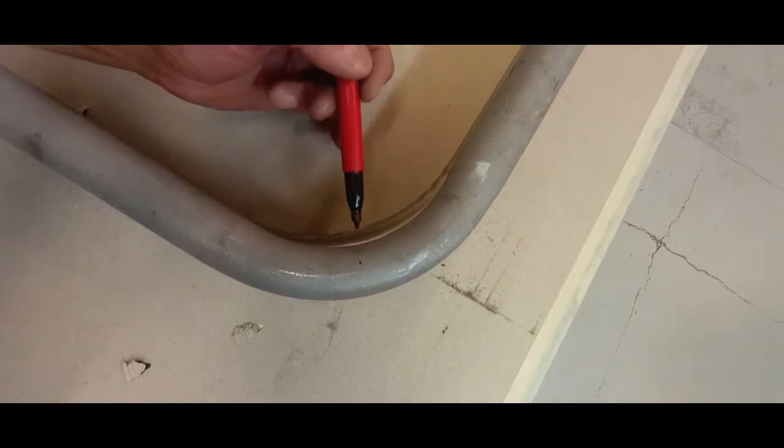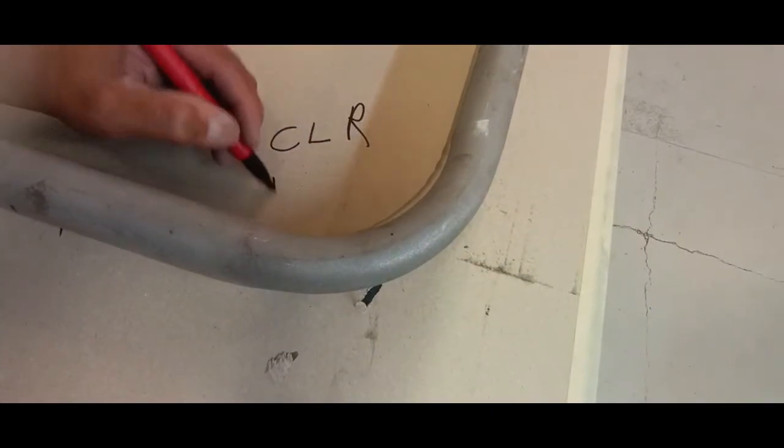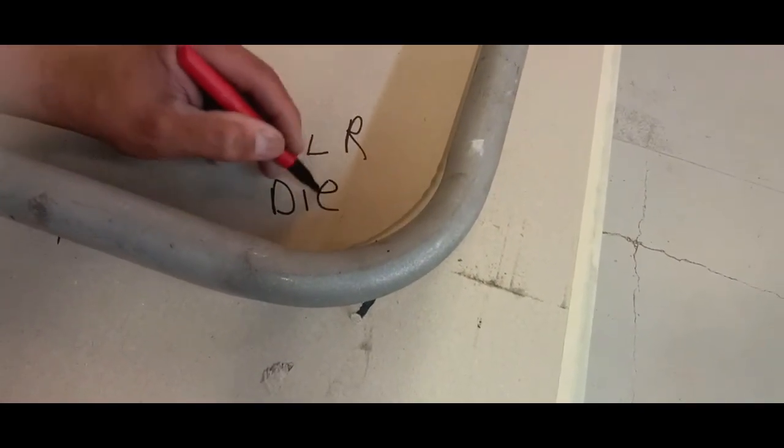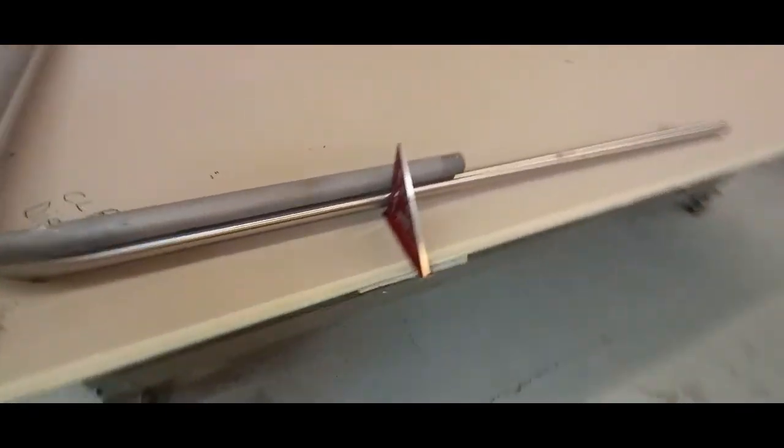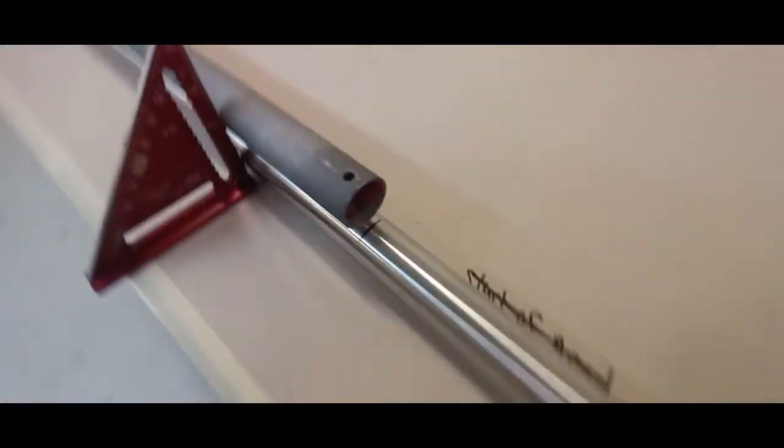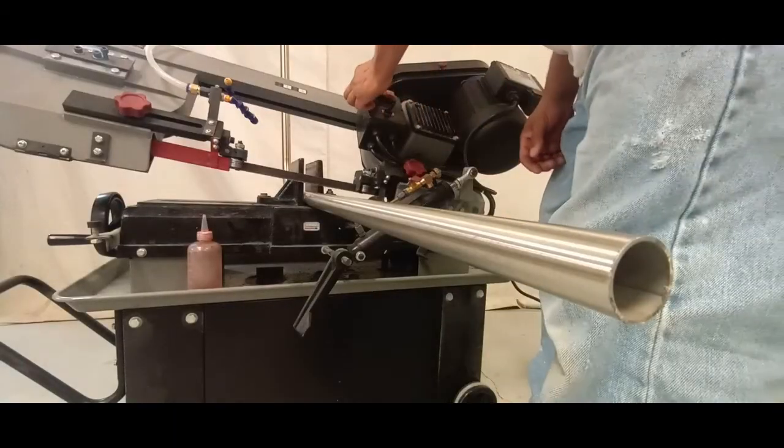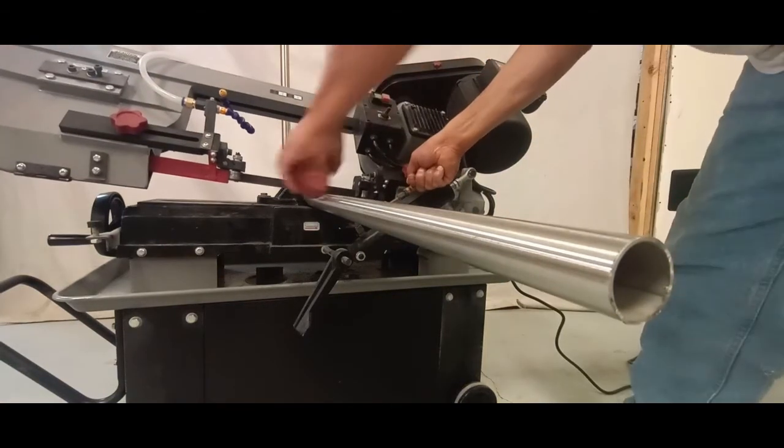Okay now you might have noticed that the bend is actually slightly different than the original, and the reason for that is that was bent with a different centerline radius die. And we've replicated this perfectly, but it's not going to have that same contour bend unless it's accomplished with the same CLR die. Not a big deal at all. So we're going to get this thing cut off and that's that.